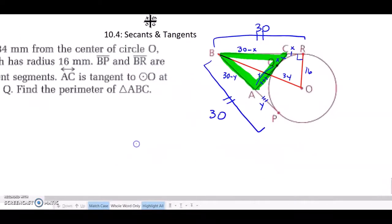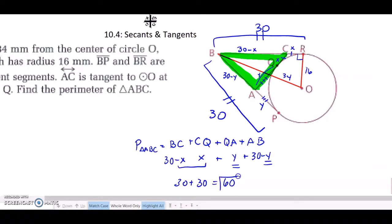And then I could say that the perimeter of triangle ABC is equal to BC plus CQ plus QA plus AB. And I know that BC is 30 minus X, CQ is X, those cancel out, and then QA is Y, and AB is 30 minus Y. So now I have 30 plus 30 is 60.